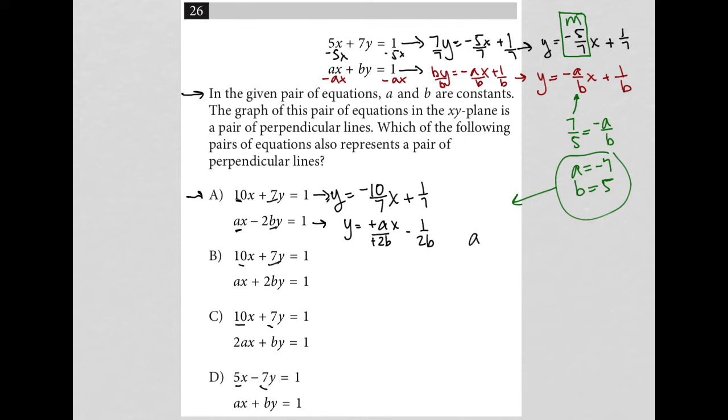I know now that if choice A is the correct answer, that would mean A over 2B should equal positive 7 over 10, because that would be the opposite reciprocal of the slope in the first equation. What we're trying to figure out is, does the slope in the first equation equal the opposite reciprocal slope in the second equation? Because that's what's necessary to have perpendicular lines. So is this true? It's almost true, because we have A as negative 7, so this becomes negative 7 over 2 times B, well B is 5, so 2 times 5 is 10. So it's negative 7 over 10, not positive 7 over 10. For that reason, A is gone.